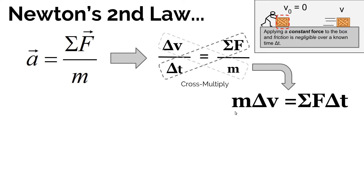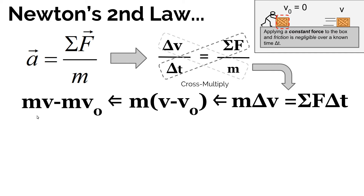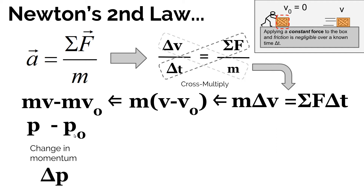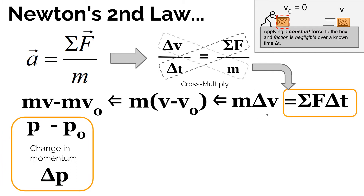Now let's rearrange the left side. The change in velocity equals final velocity minus initial velocity, so we have M times (final velocity minus initial velocity). Distributing M gives us mass times final velocity minus mass times initial velocity. Since M times V is an object's momentum, M times final velocity is final momentum and M times initial velocity is initial momentum. Final momentum minus initial momentum is just the change in momentum. So the left side of the equation is simply the change in the system's momentum.